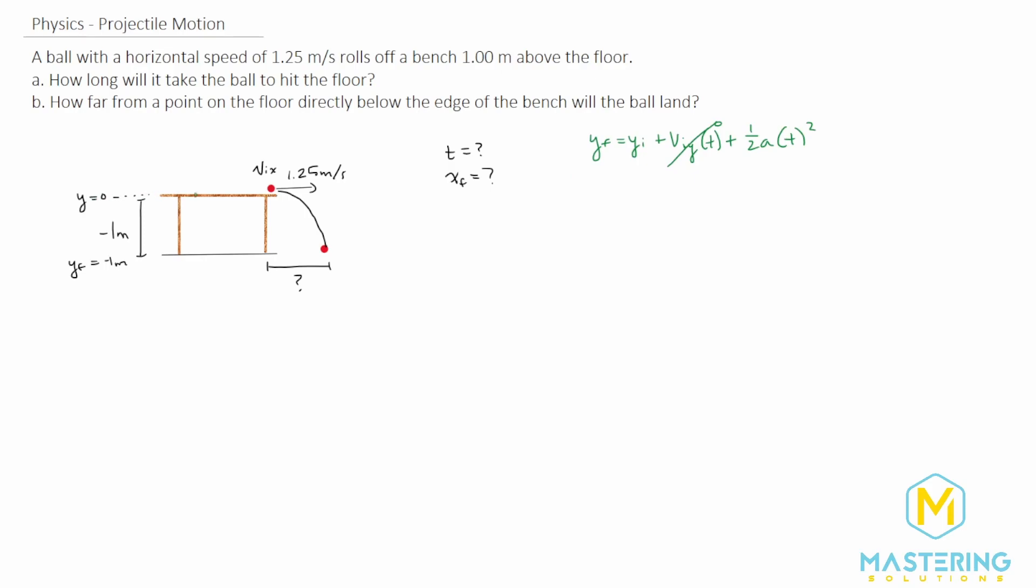The initial y, as we talked about, it's at y equals 0, so that also goes to 0. So y final is equal to 1 half the acceleration times the time squared.